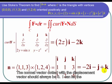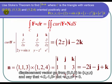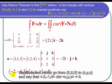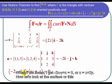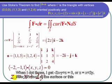So the normal vector dotted with the displacement vector should always be 0. And I can let the displacement vector go from (0, 0, 0) to (x, y, z), and say that (-2, -1, 1) dotted with (x, y, z) is equal to 0. And when I dot those, I get -2x - y + z = 0, or z = x + 2y.